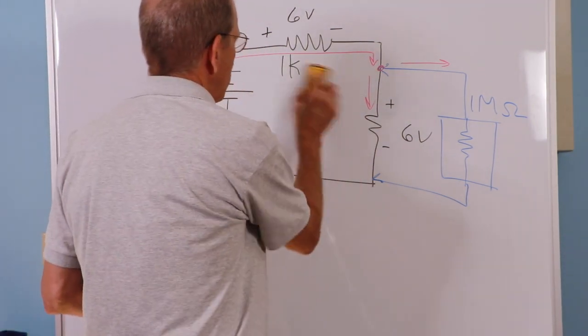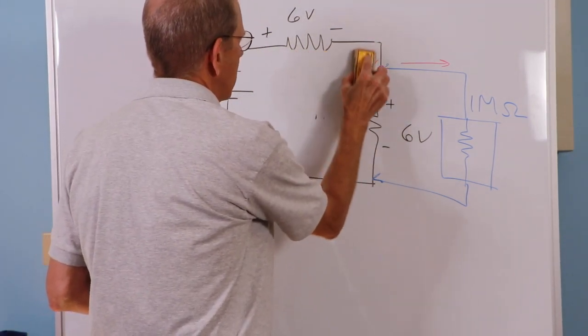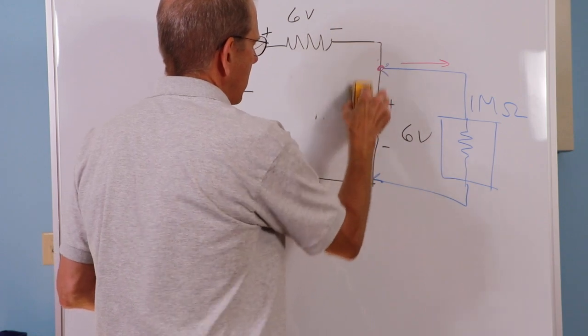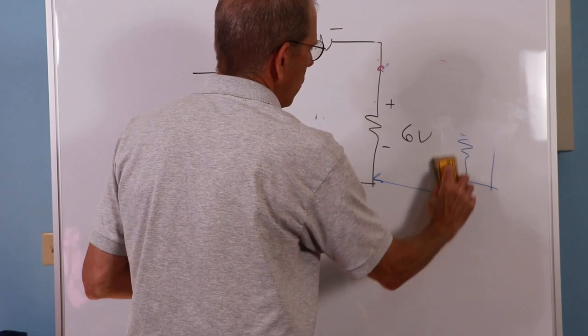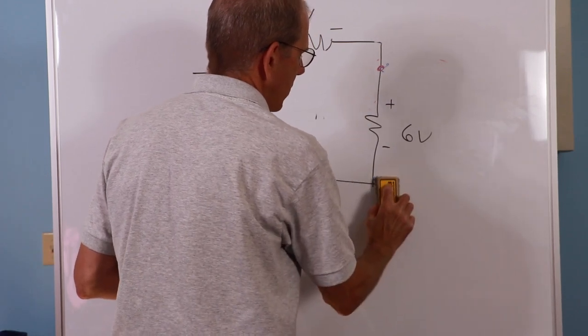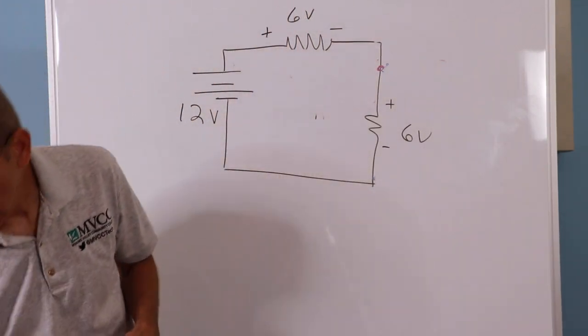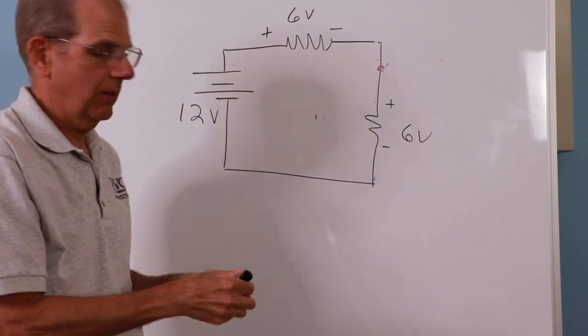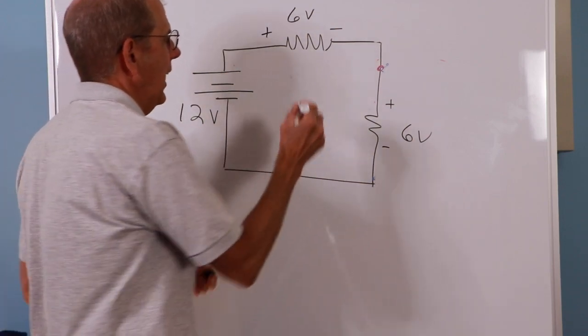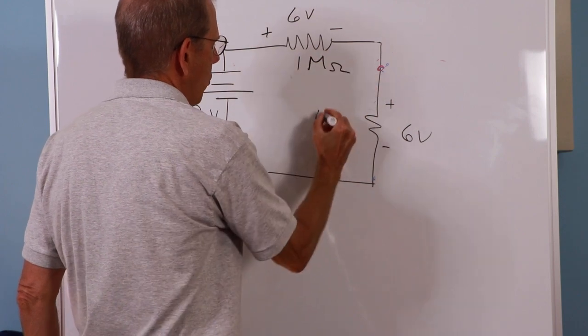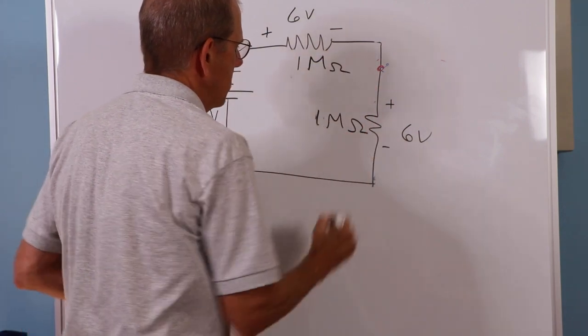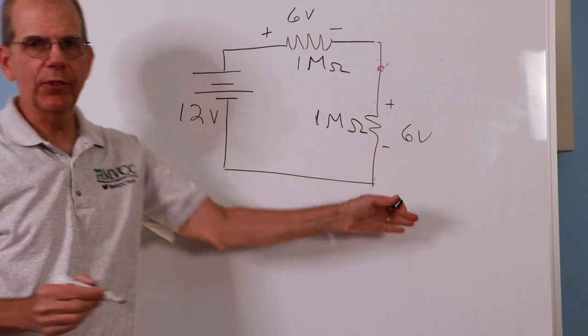So let's get rid of our 1k resistors. On paper, we can put any equal-valued pair of resistors on here and still get 6 and 6. So if I had a 1 megohm resistor here and a 1 megohm resistor here, on paper, I'm still going to get 6 volts and 6 volts.